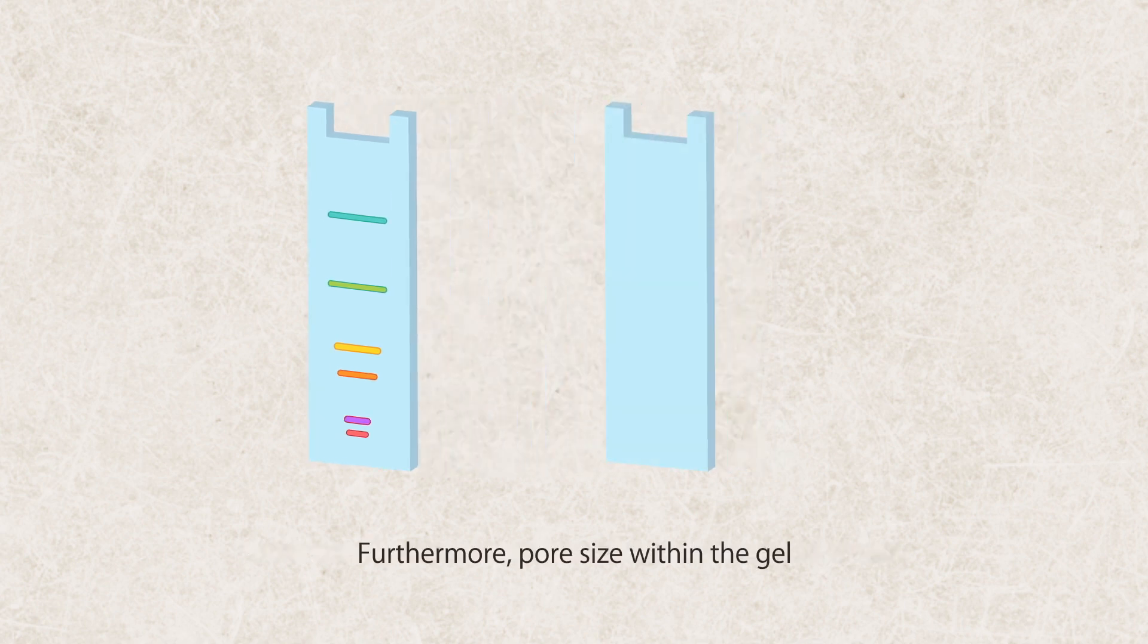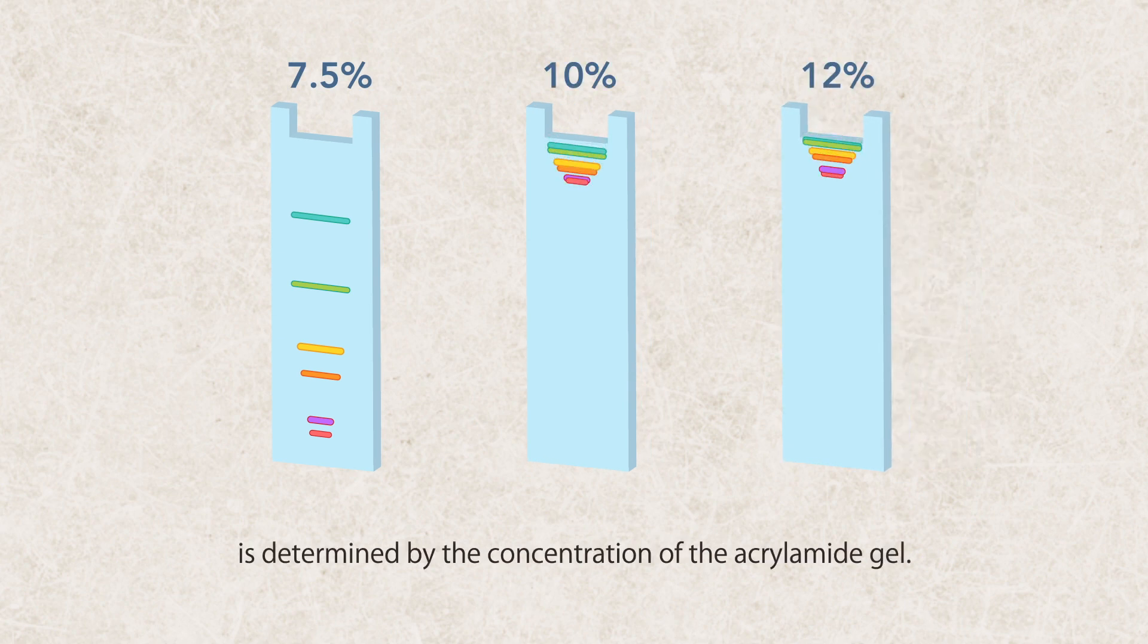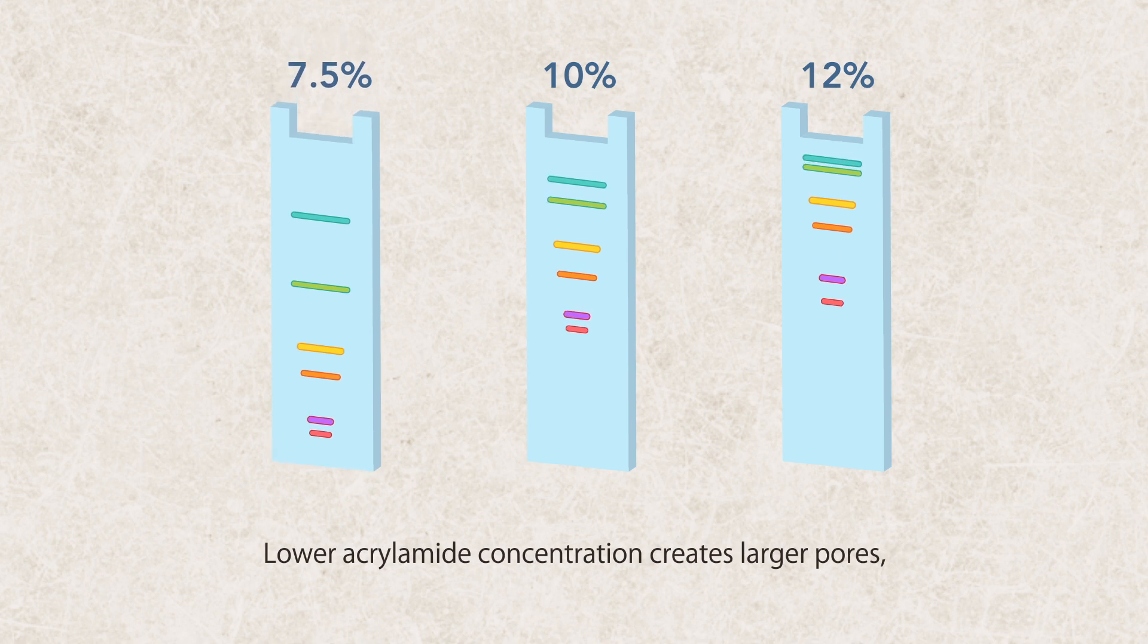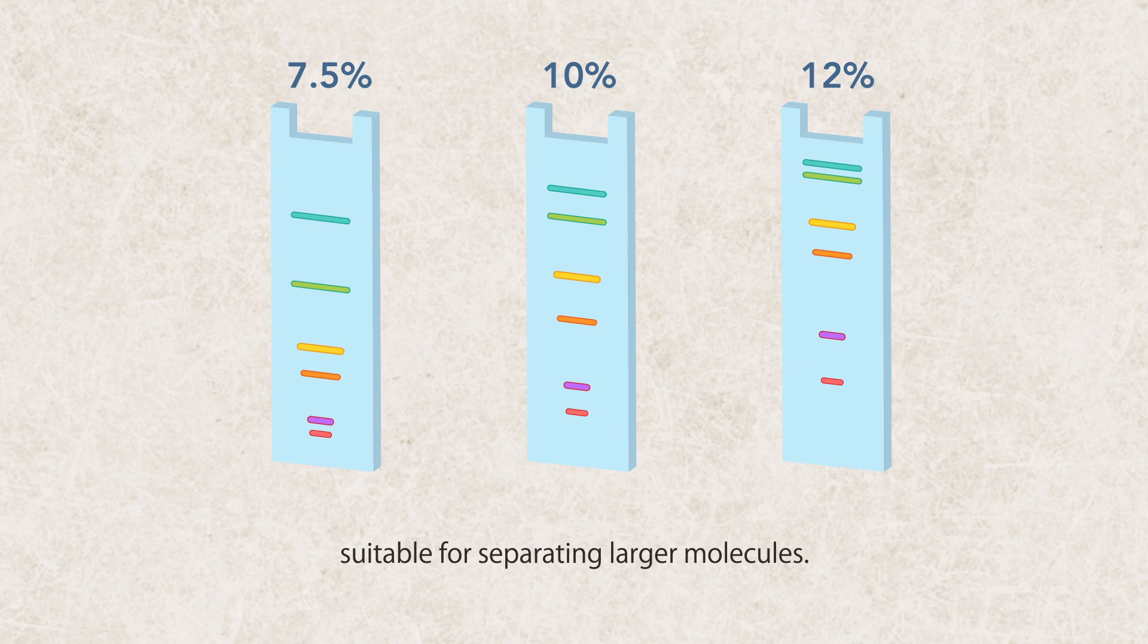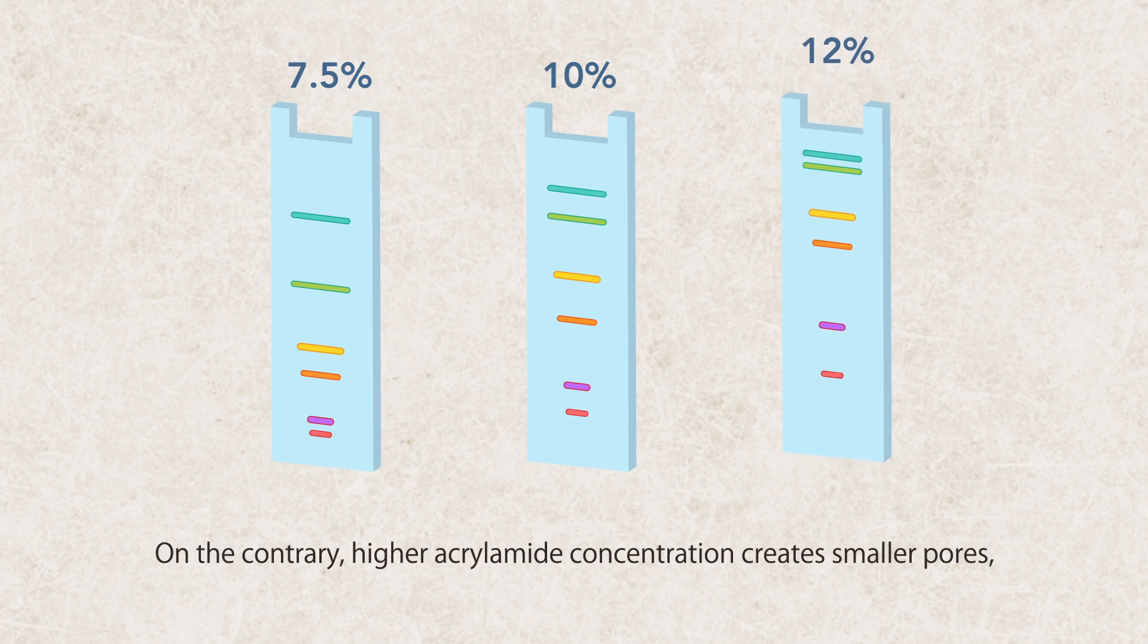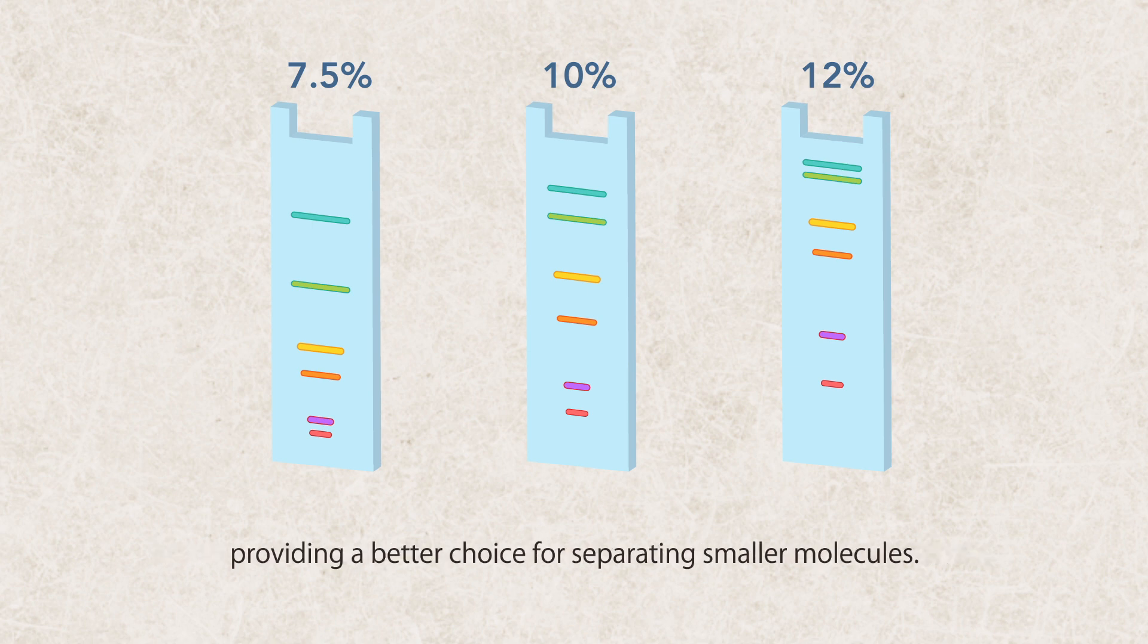Furthermore, pore size within the gel is determined by the concentration of the acrylamide gel. Lower acrylamide concentration creates larger pores, suitable for separating larger molecules. On the contrary, higher acrylamide concentration creates smaller pores, providing a better choice for separating smaller molecules.